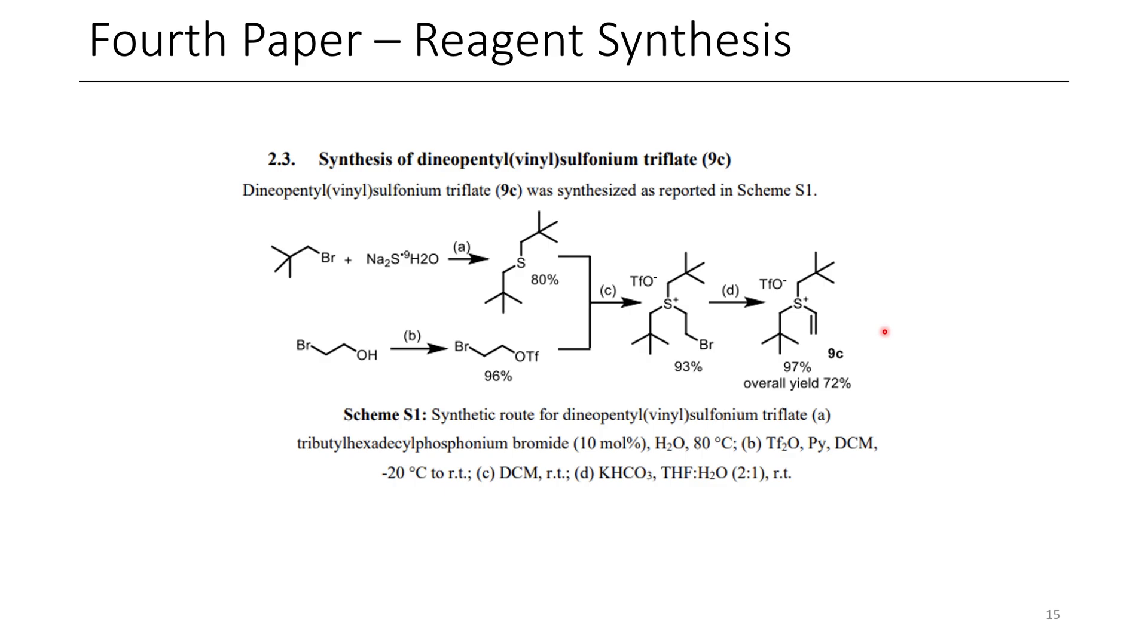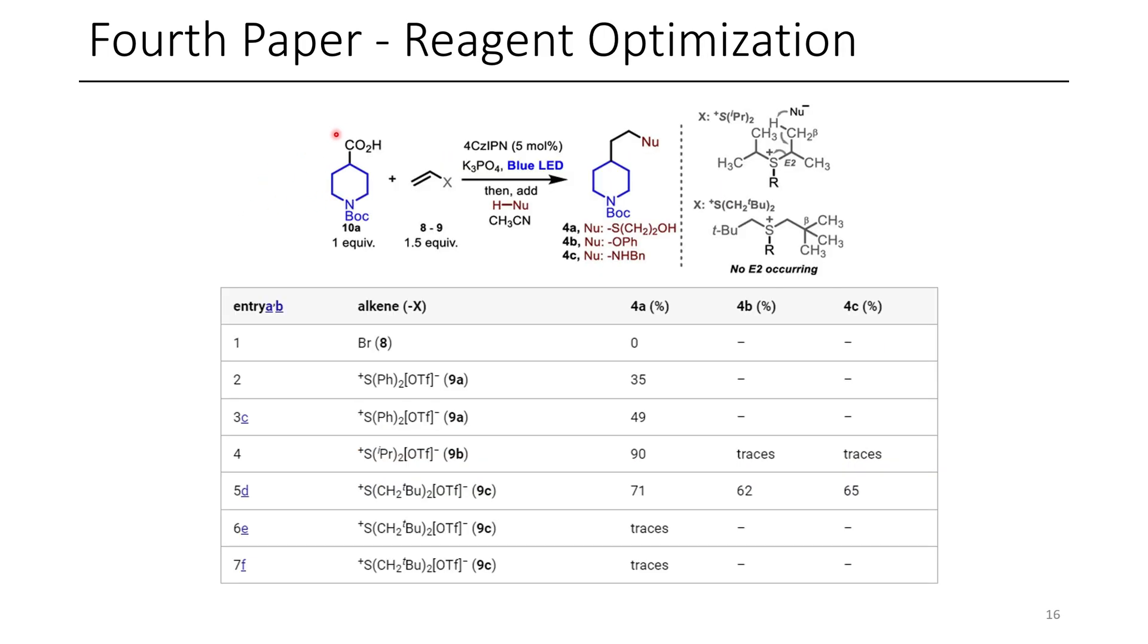Now, you might think normally triflates are a fairly good leaving group on their own, and they are, although there's certain instances where it might be harder to form certain bonds through the use of a triflate. And so what the authors do is they add in a radical to their vinyl sulfonium. Once the sulfonium adduct is formed, they're then able to displace the sulfonium as a leaving group. Here you can see they used vinyl bromide. Unfortunately, this just polymerized because, hey, we have a radical and an alkene. What does that do? Radical polymerization. But with the sulfoniums, that wasn't an issue.